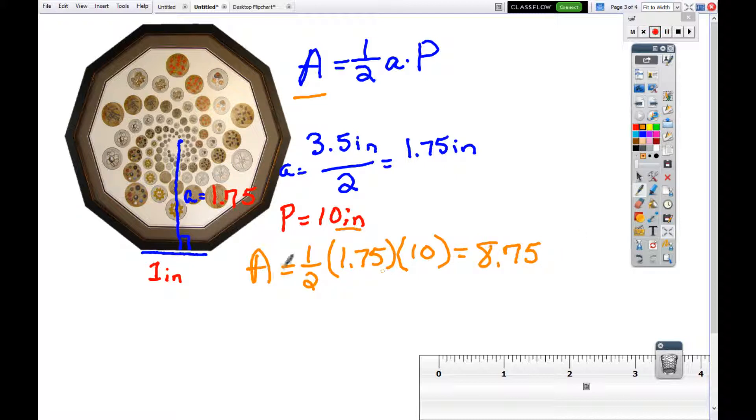Now units - since it's area, our units is going to be inches squared. So once again, the total area inside the polygon is 8.75 inches squared.